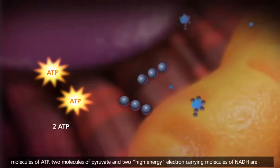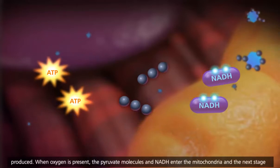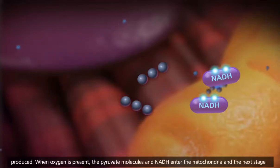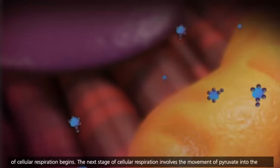In the process, a net of two molecules of ATP, two molecules of pyruvate, and two high-energy electron-carrying molecules of NADH are produced. When oxygen is present, the pyruvate molecules and NADH enter the mitochondria, and the next stage of cellular respiration begins.